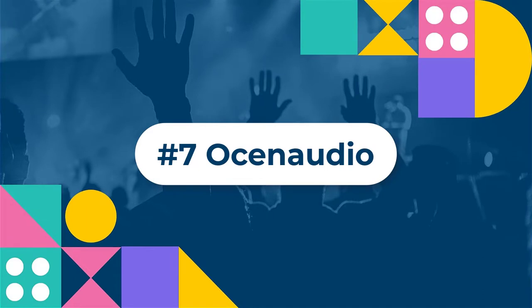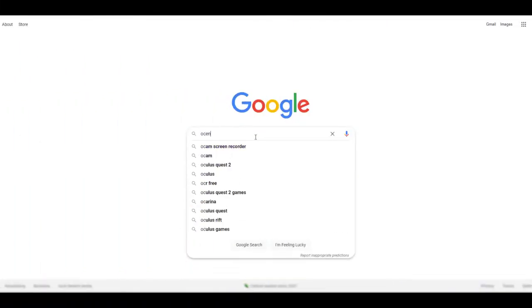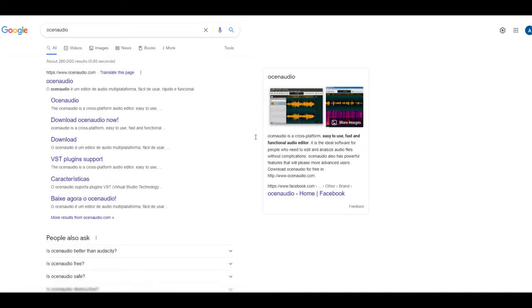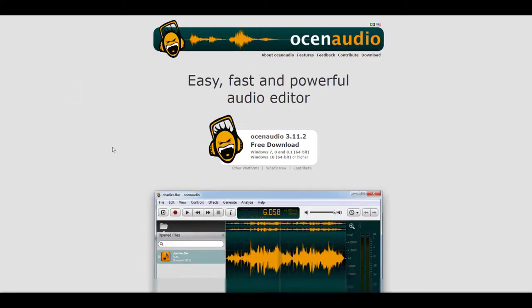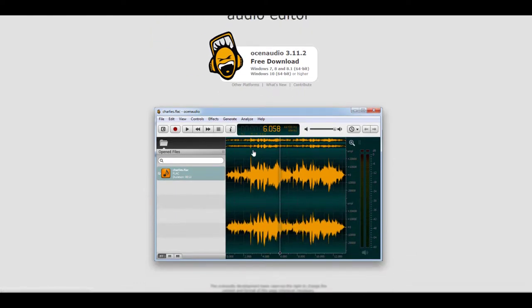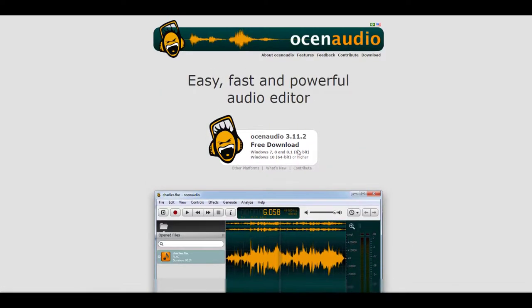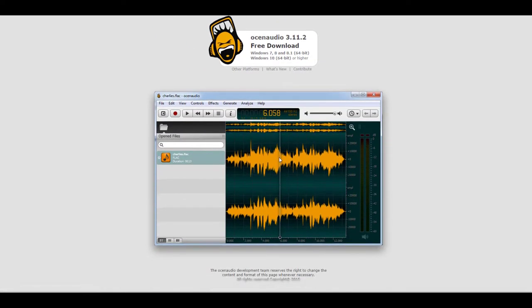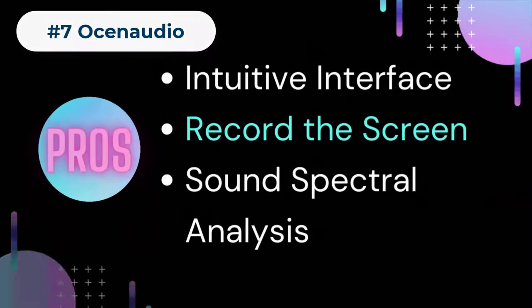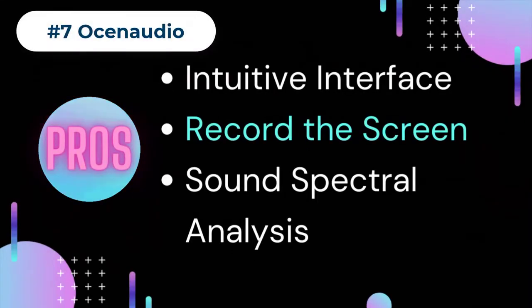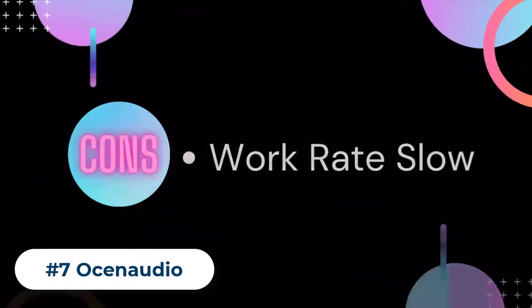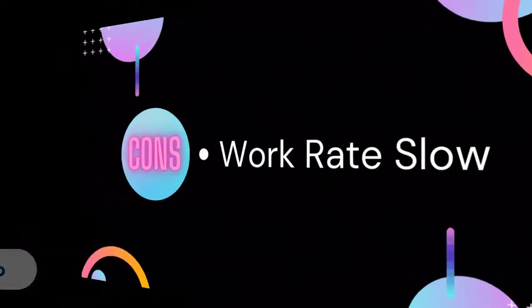Number seven: Ocean Audio. If you are an amateur musician or podcaster, Ocean Audio free MP3 recording software will certainly work best for you. The program is simple to use and has fewer professional features, making it easy to learn. Besides recording, Ocean Audio has rich editing features that will help enhance the quality of your MP3 audio. Pros: intuitive interface, allows users to record screen sound, and spectral analysis is highly advanced. Cons: work rate can be relatively slow.